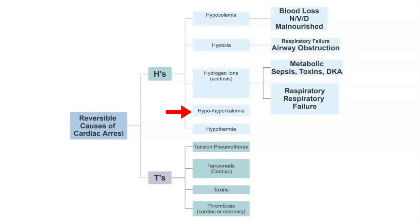Next is hypo or hyperkalemia — we're going to look at both high and low potassium. For hypokalemia, look at GI losses like vomiting or diarrhea, or the use of diuretics. For hyperkalemia, look at renal failure patients. We'll want labs to check potassium levels. If potassium is too low, we replace it. If too high, we drive potassium back into the cells with a combination of insulin and D50.